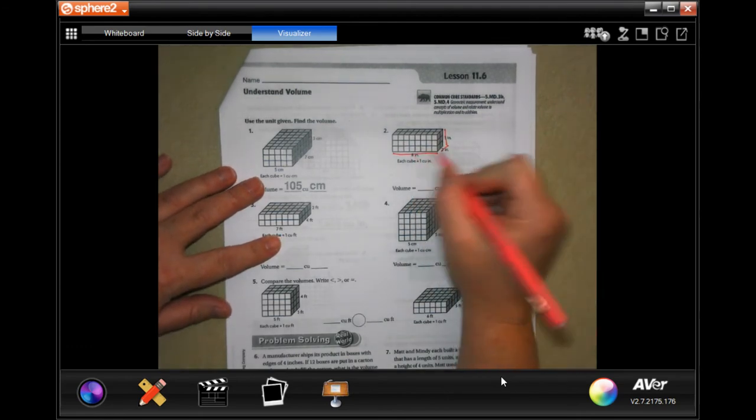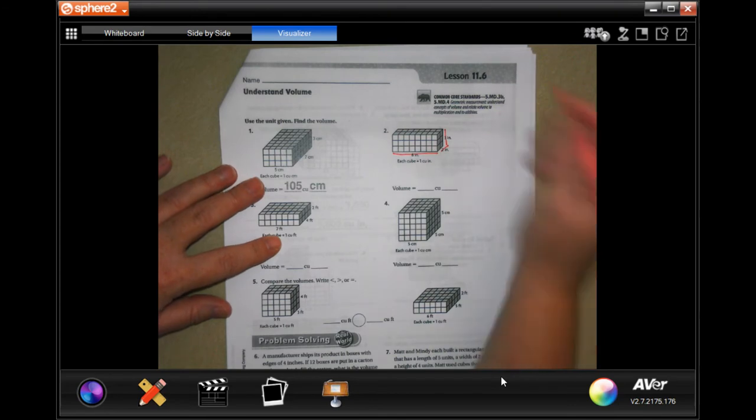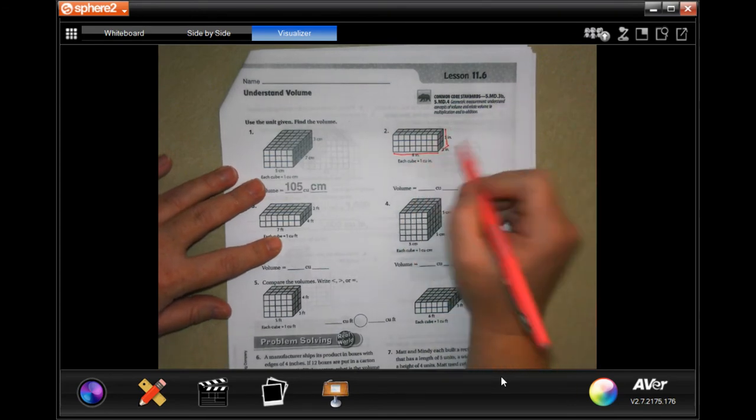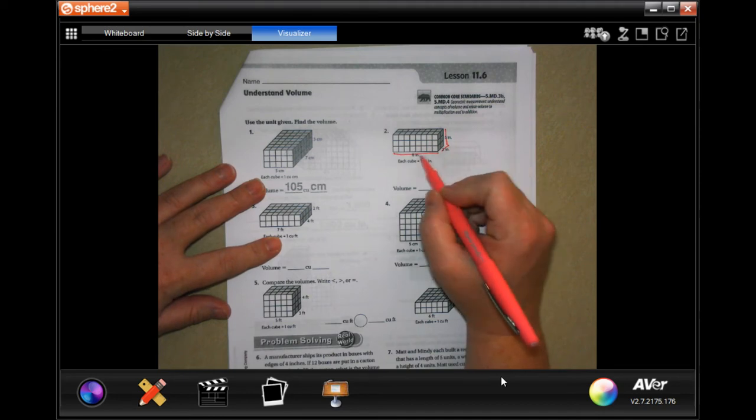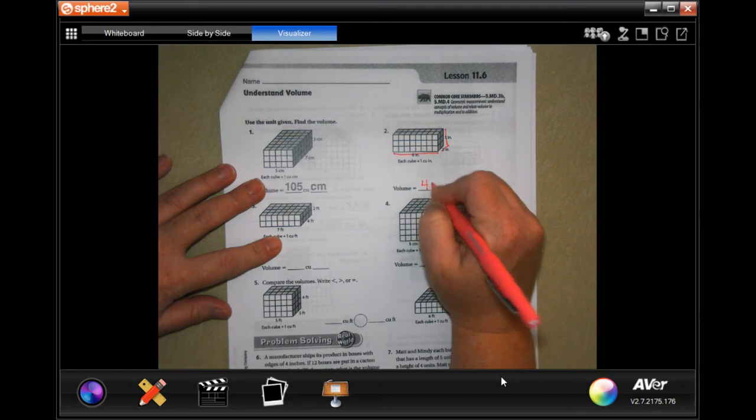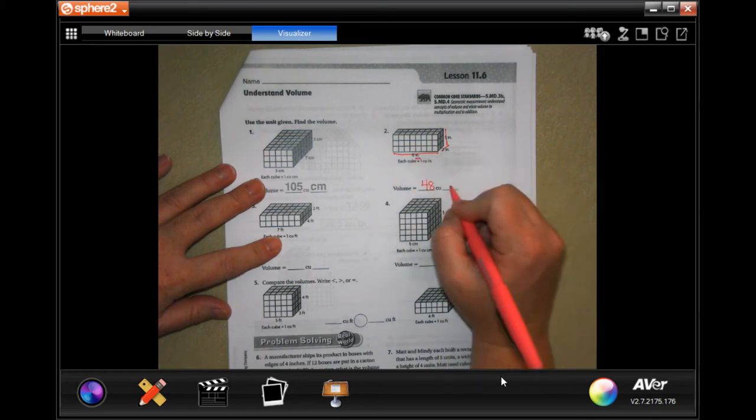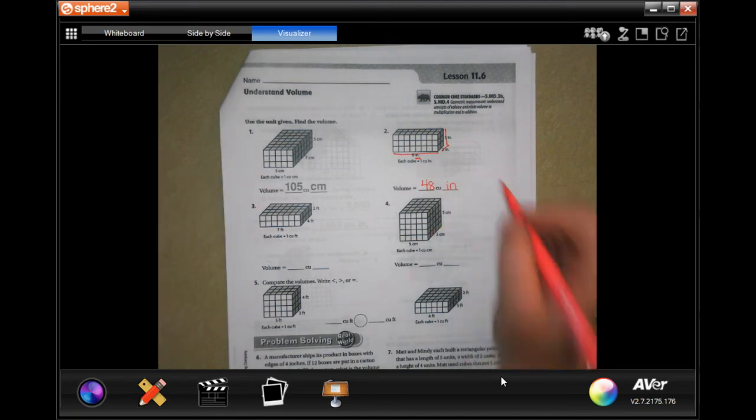In this case we're doing 8 times 2 times 3. I would actually do 3 times 2 first because that's easy—it's 6, and then 6 times 8 is 48. It's being measured in inches so it's 48 cubic inches.